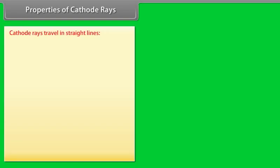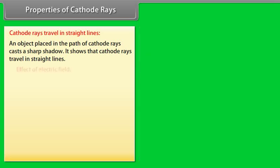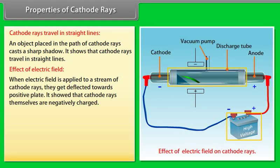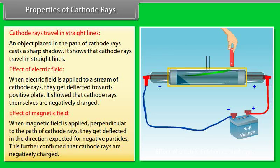Properties of cathode rays: Cathode rays travel in straight lines — an object placed in their path casts a sharp shadow. When an electric field is applied, cathode rays are deflected towards the positive plate, showing they are negatively charged. When a magnetic field is applied perpendicular to their path, they deflect in the direction expected for negative particles, further confirming they are negatively charged.